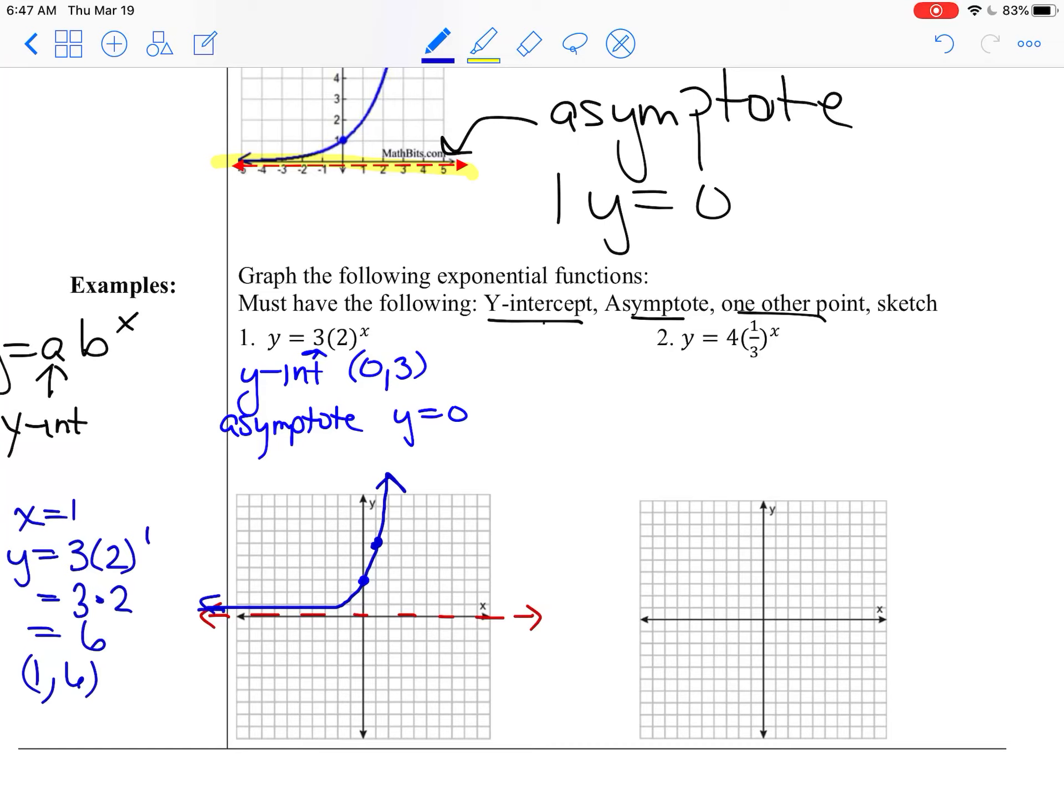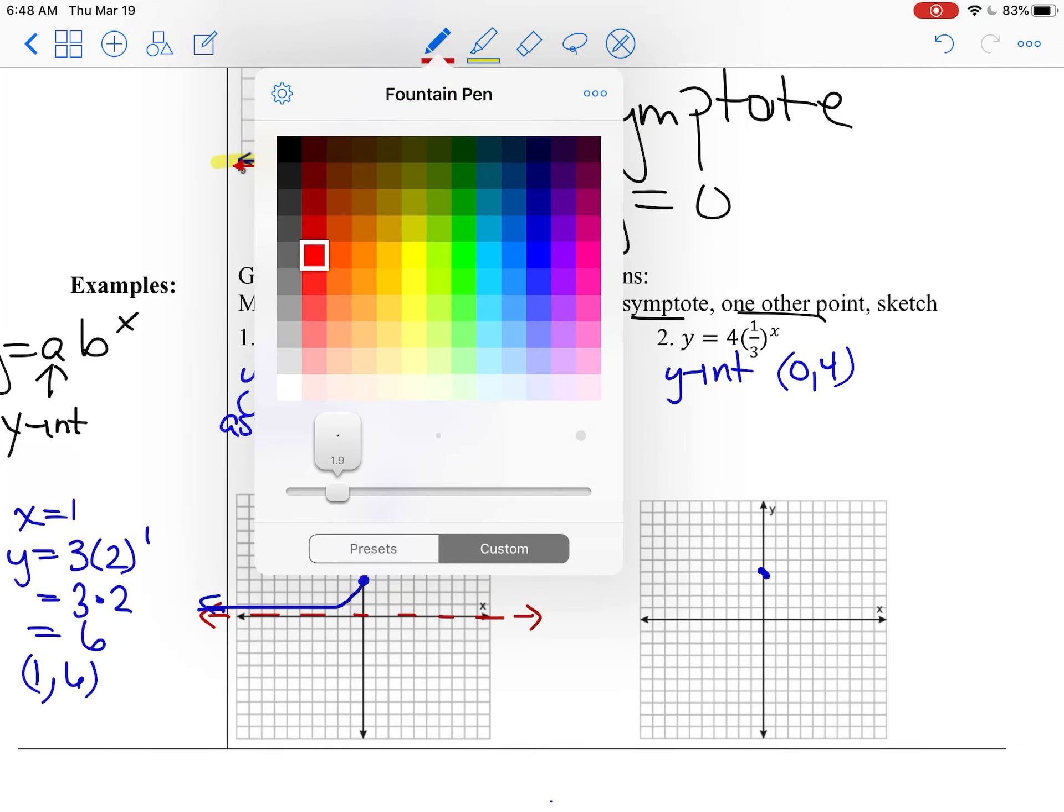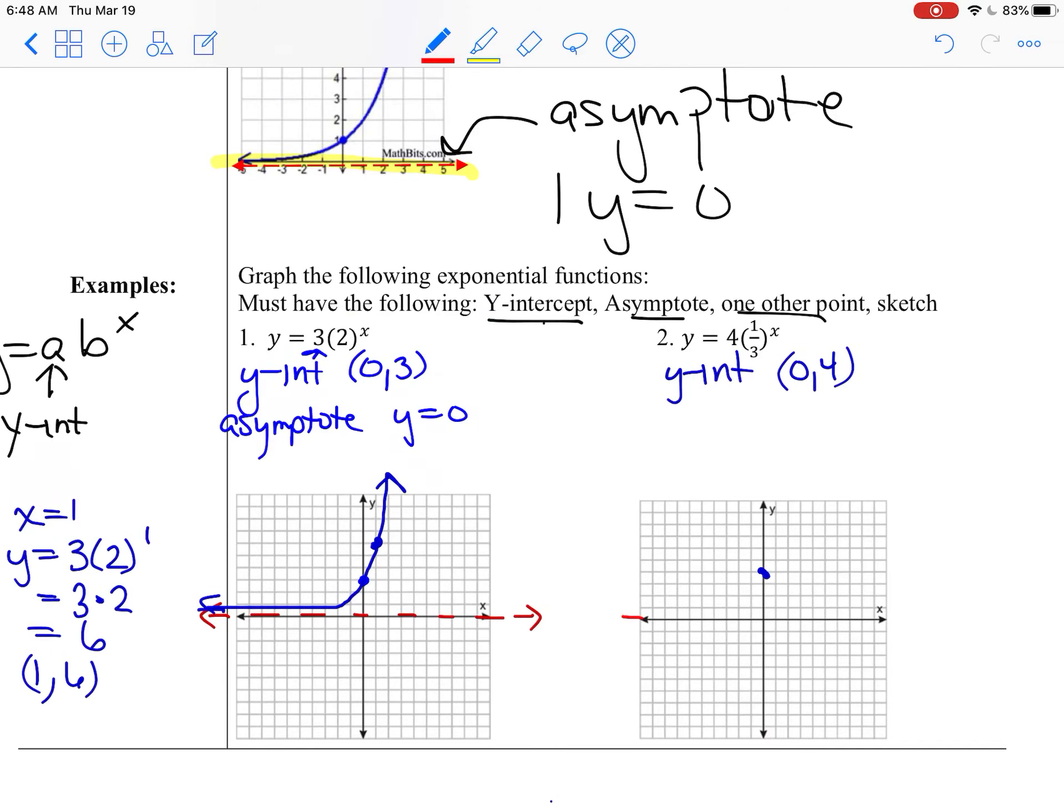All right. So let's do this one. So y-intercept this time is 4, at (0, 4). Asymptote is still in the same spot.